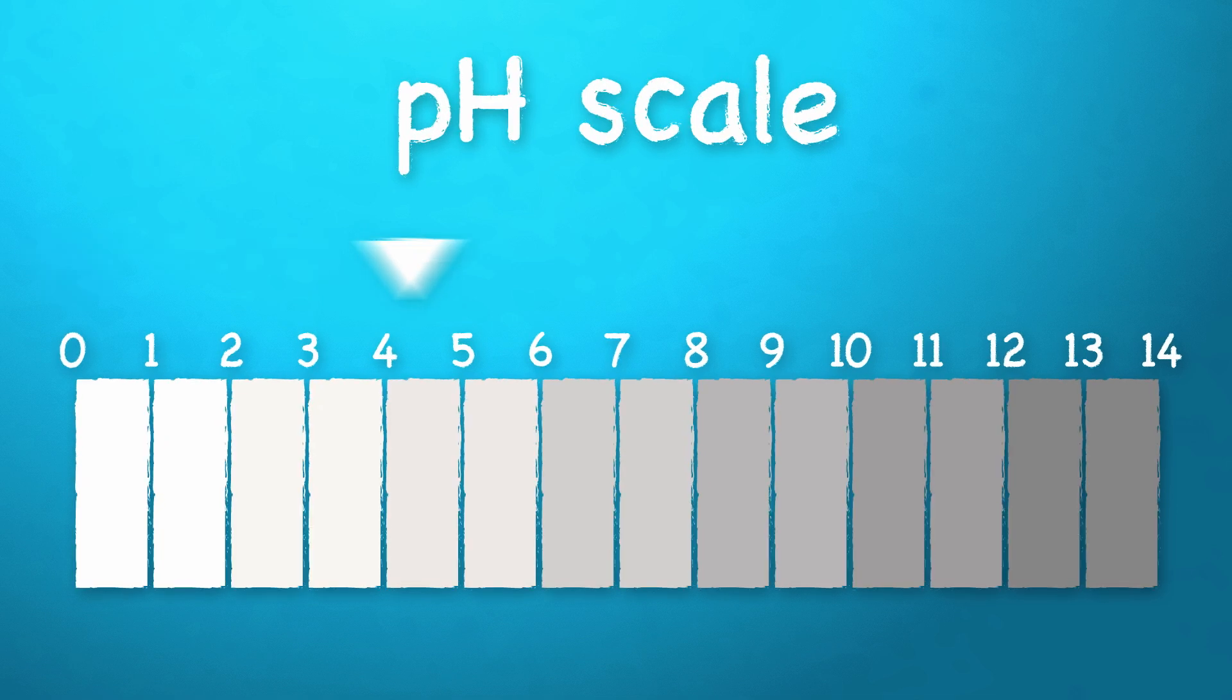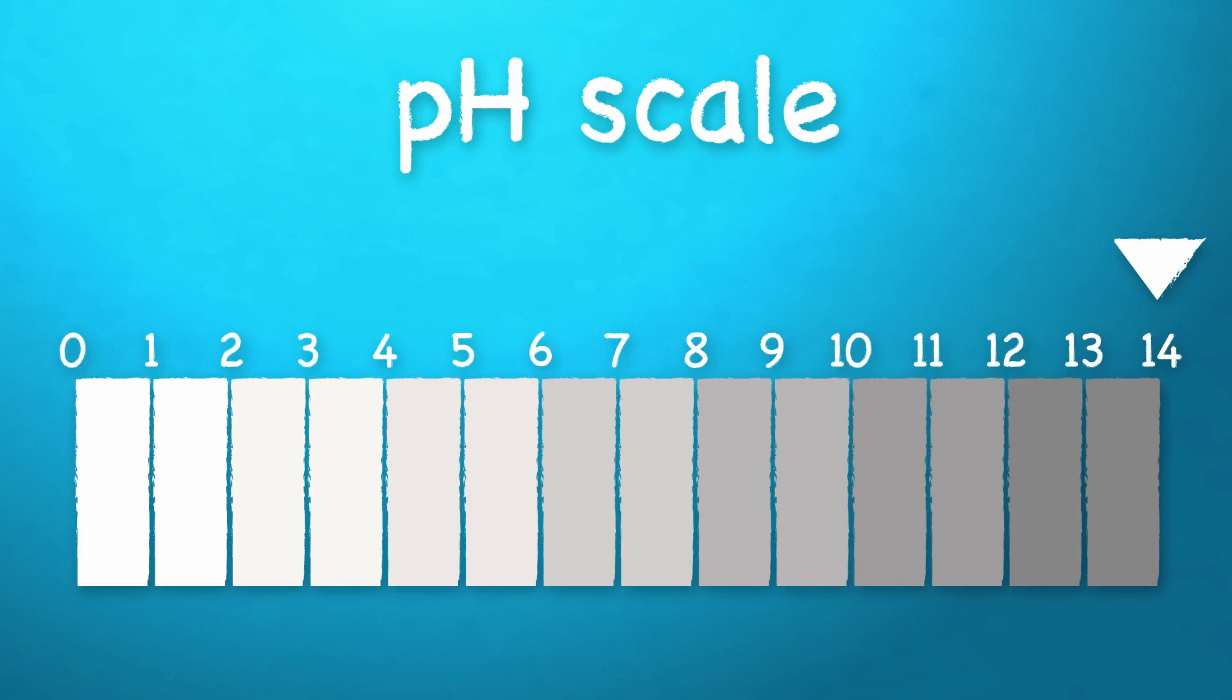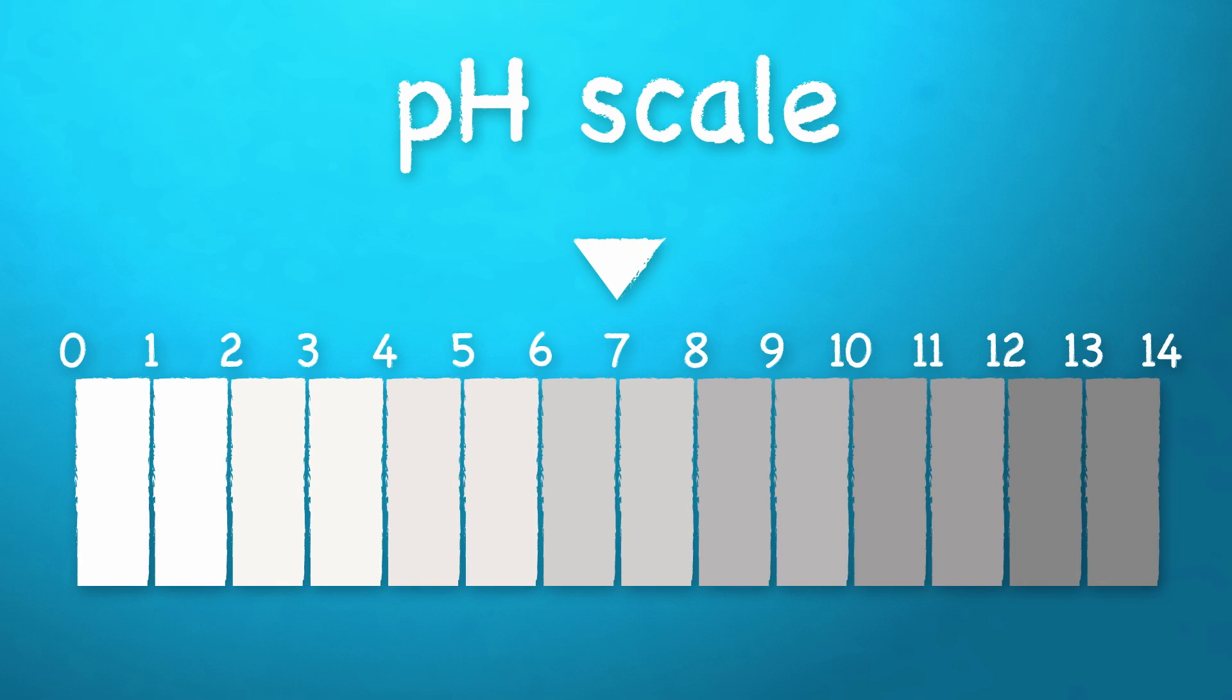Zero being the most acidic, 14 being the most base or alkaline, and seven being neutral. It's like pure water.